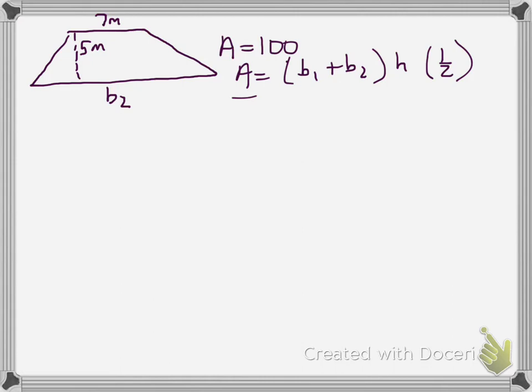I do know A, that's our total area, and that is 100. I do know base 1, that's 7. I don't know base 2, so I'm going to just leave that as base 2. I do know the height, that's 5, and 1 half.